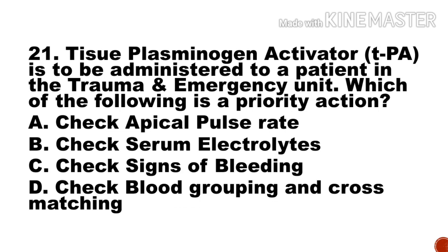Next question: Tissue plasminogen activator is to be administered to a patient in the trauma and emergency unit. Which of the following is a priority action? a) check apical pulse rate, b) check serum electrolytes, c) check signs of bleeding, d) check blood grouping and cross matching. Option c, check signs of bleeding, is the right answer.